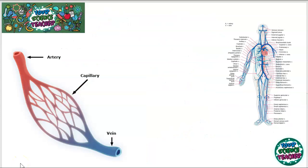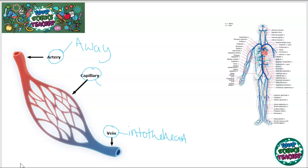Now we know what blood is comprised of, we need to look at how it moves around the body. There are three main vessels: the artery, the capillary, and the vein, and they are perfectly adapted for carrying blood in the way that needs to be done. The artery takes blood away from the heart. The capillaries connect the arteries and the veins together, and a lot of diffusion happens in the capillaries — oxygen into the blood and carbon dioxide out — around the alveoli and the lungs.